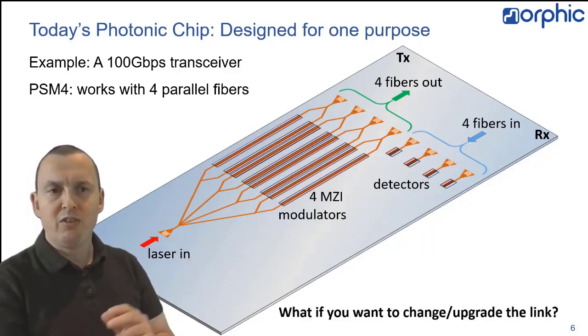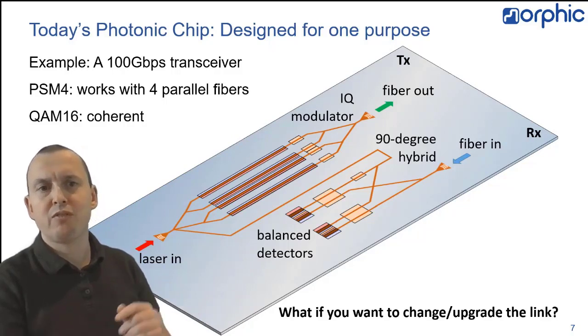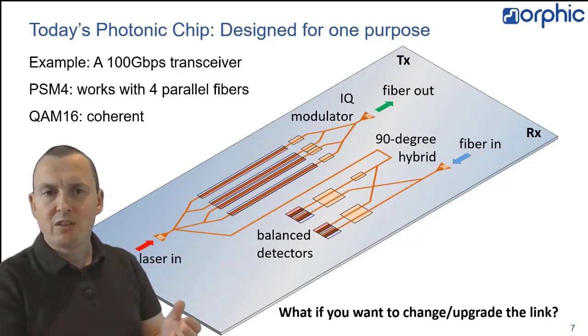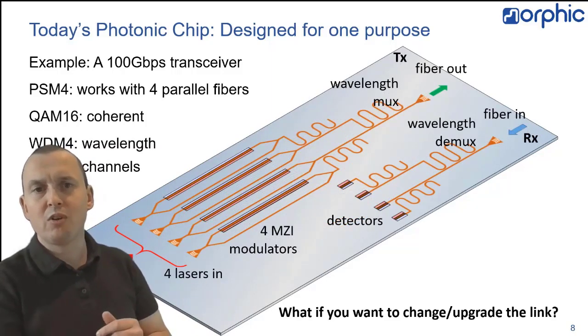But if you want to upgrade your link, for instance, to coherent communication, you need to start all over again, by taking the same type of building blocks, but wiring them up in a different way. And if you want to do wavelength division multiplexing, you have to throw in some wavelength filters, but essentially you're using the same building blocks again, but wiring them up again in a different way.